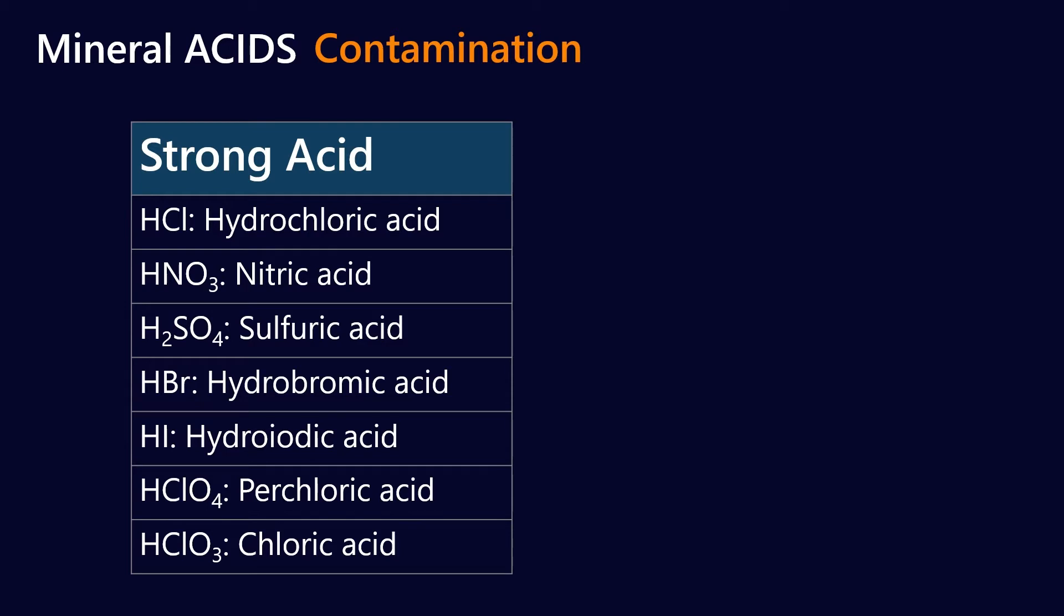With weak acids, that doesn't happen. So if hydrochloric acid were a weak acid, then some of the hydrogen and chlorine would continue to stay bonded, even though it's in solution.